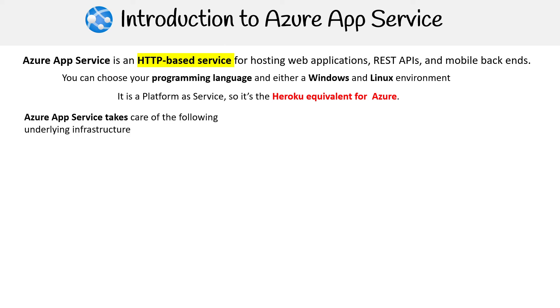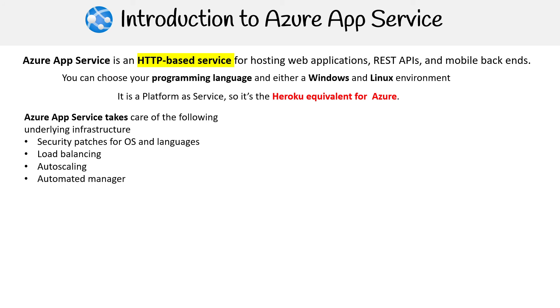Azure App Service takes care of a lot of the underlying infrastructure for you. It handles security patches of the OS and languages, load balancing, auto scaling, and automated management.